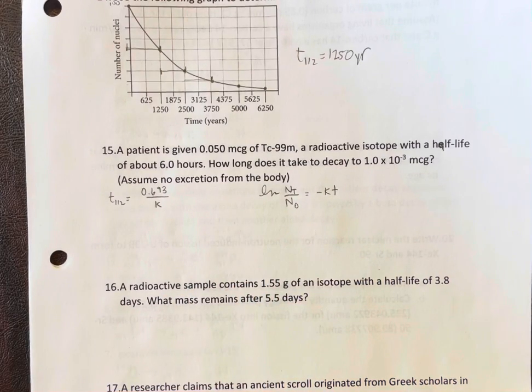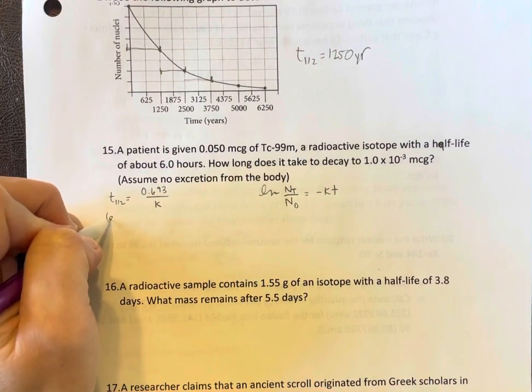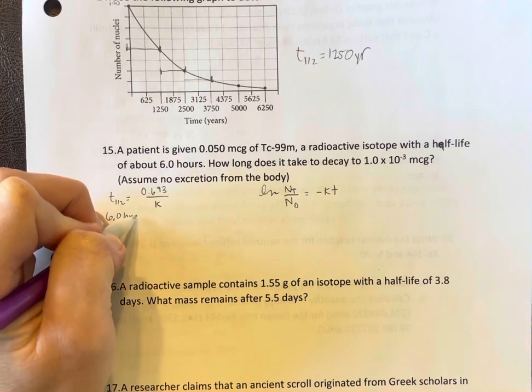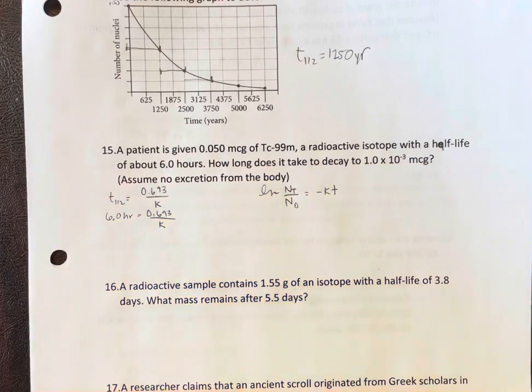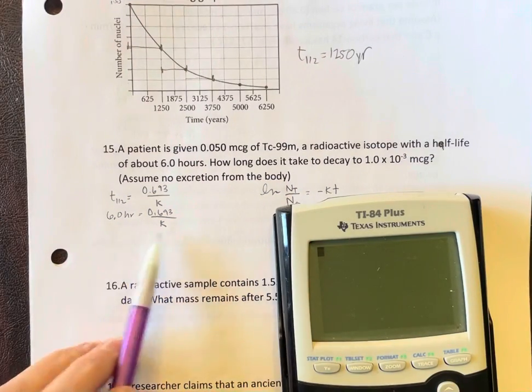So our half-life is six hours. 0.693 divided by k. Make sure you do your division correctly.